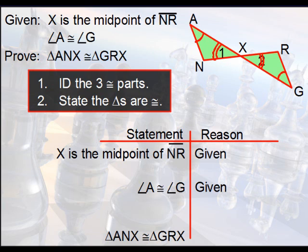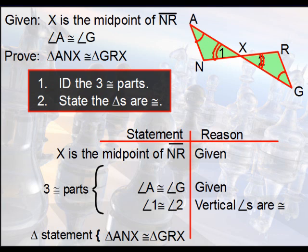So let's go ahead and write that. Angle 1 is congruent to angle 2, and how do we know that's true? Because those are vertical angles, and vertical angles are congruent. Remember you need three pairs of congruent parts, and what we have now are two of them. So what we need now is one more.